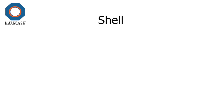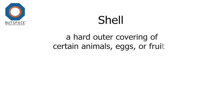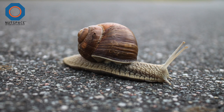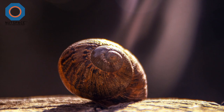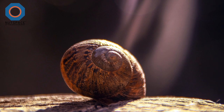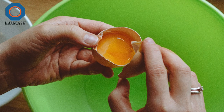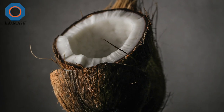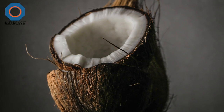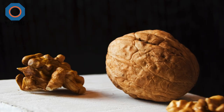Shell — a hard outer covering of certain animals, eggs, or fruits. Look at this hard rigid covering over this snail and this tortoise — it is their shell. The covering of an egg is also called a shell. Sometimes fruits also have a hard rigid covering, mostly made of fiber, like coconuts.